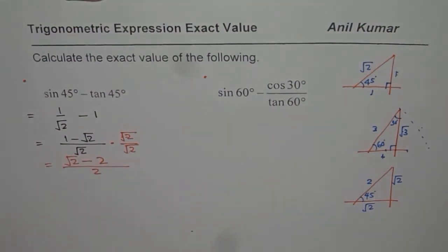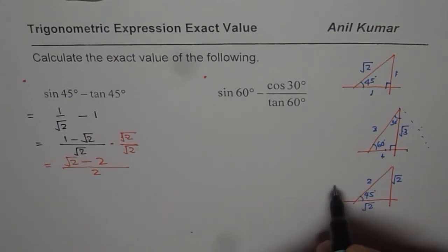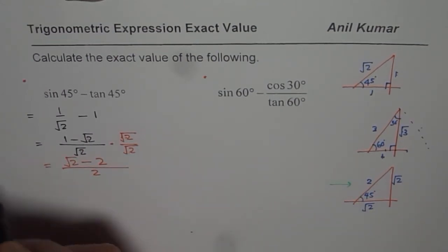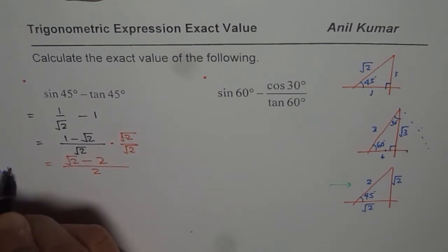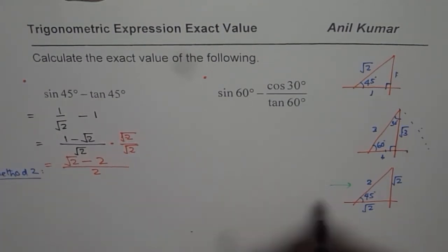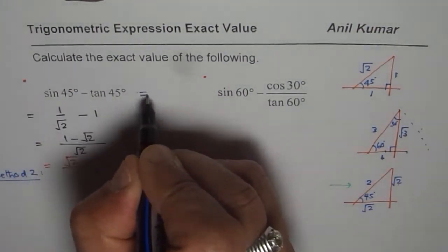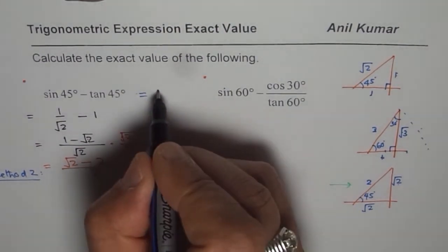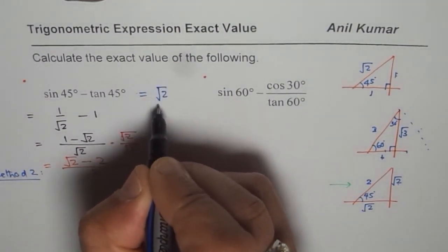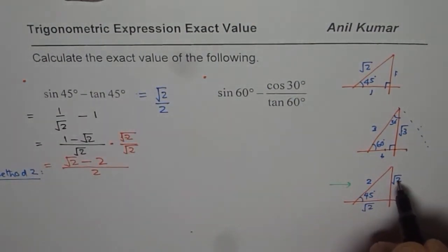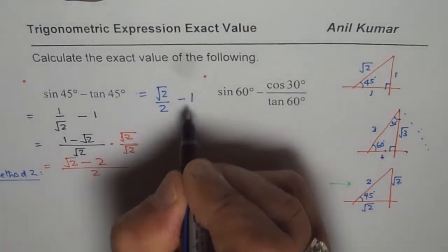Now if you use the second triangle, then see how the solution becomes simpler. And that is what we want to highlight. So now we are doing method 2. Using second triangle, sine 45 degrees now becomes square root 2 over 2. So we could write this expression as, okay, let me write it in here itself. Square root 2 over 2 and tan of 45 degrees is still 1.